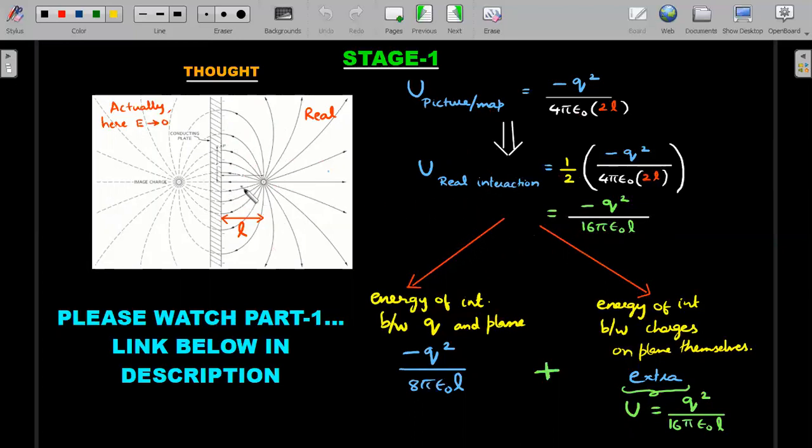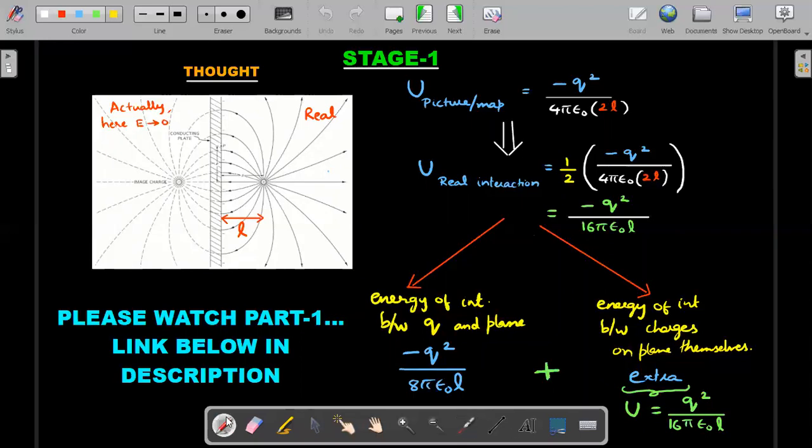So we realized that and we said real interaction - the energy should be only half of what you expect from an image charge configuration. So we ended up with this. Then we realized that this energy contains two further parts. Total energy of the map is nothing but energy of all possible interactions. So the types of interactions that you will have - part one would be the energy of interaction between this point charge and the sigma on this plate, that distribution on this plate that we found out from the previous problem.